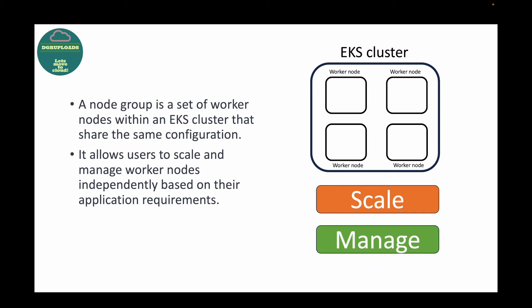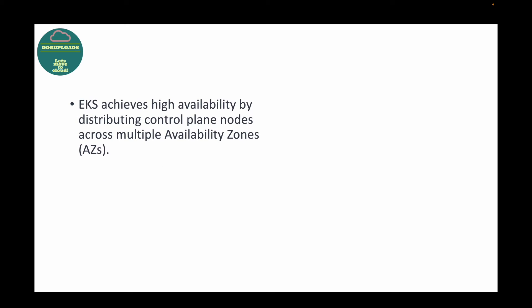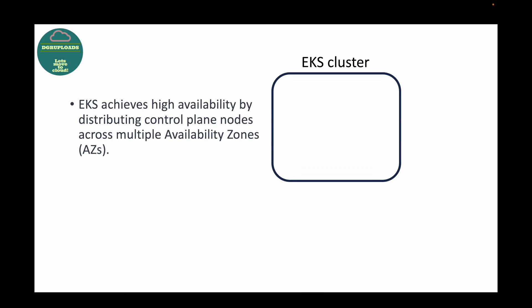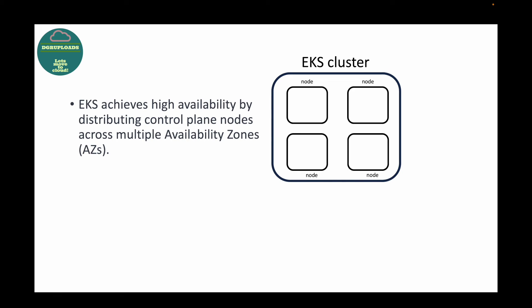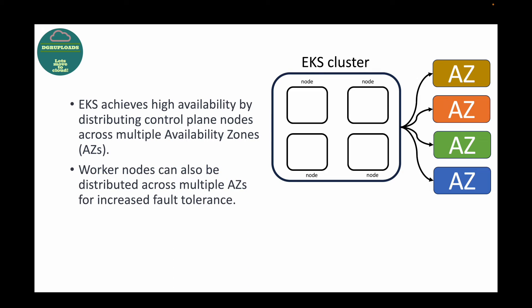The next question is: how can you achieve high availability in an EKS cluster? In AWS, when we talk about high availability, it is always recommended to distribute resources across multiple Availability Zones. In EKS, the worker nodes are spread across multiple Availability Zones to ensure the cluster is highly available. If there is an issue with one Availability Zone, the other zones with their nodes remain operational, providing increased fault tolerance.